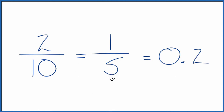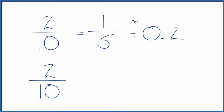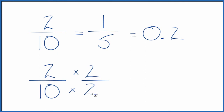Let's find another equivalent fraction for two-tenths. Instead of dividing like we did up here, we could multiply. If we multiplied two over ten by two over two — two divided by two is one, so we haven't changed the value, we just multiplied by one. But now, two times two is four, and two times ten is twenty. And four over twenty is an equivalent fraction for two-tenths.